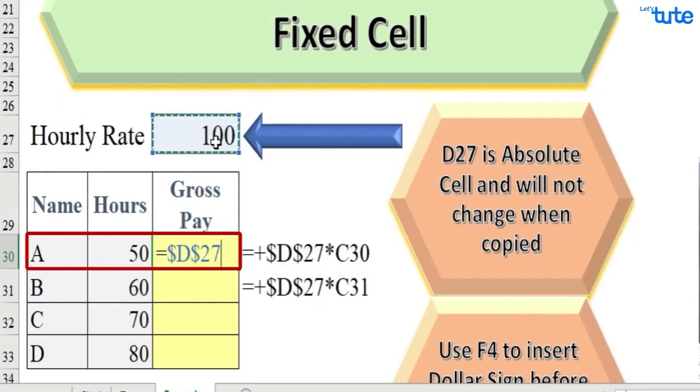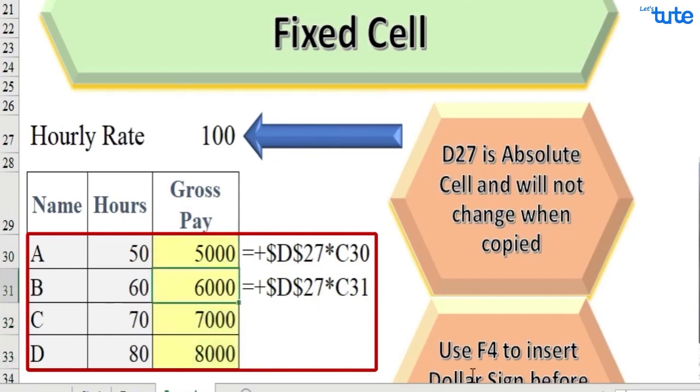Then multiply it by 50, which is cell C30, and enter. So we got the answer as 5000. Now if we copy this formula for all the other employees, we will get the correct answers of gross pay.